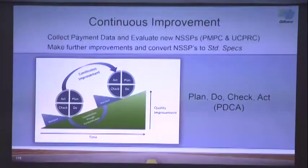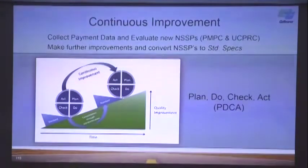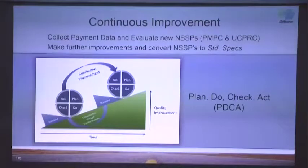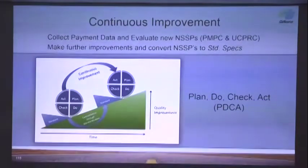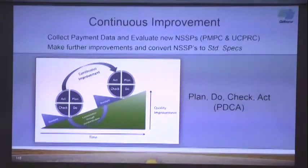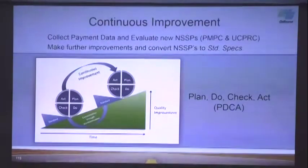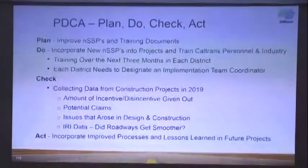Using a Plan-Do-Check-Act model: the planning stage has involved improving NSSPs and training documents. Right now we're in the Do stage where these NSSPs will be incorporated into projects and training is being conducted. The Check stage will involve receiving data from projects in 2019 to see how the payment adjustments have worked out. The Act stage will take that data and analyze how to improve the specifications.